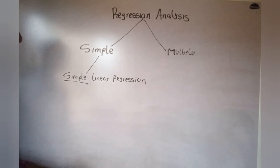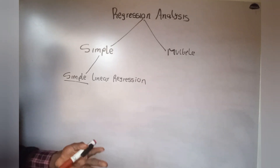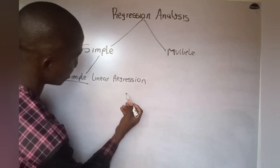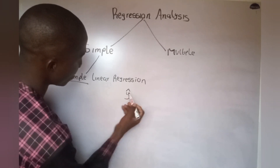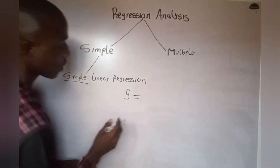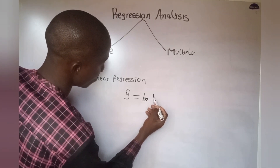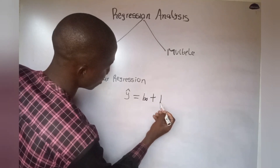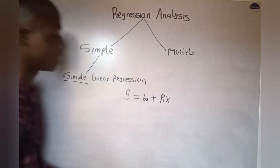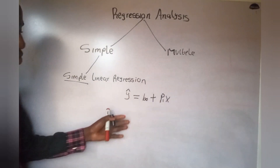Without further ado, let us proceed to the calculation aspect. A typical simple linear regression equation can be represented as: the predicted value of y is equal to the intercept plus the gradient multiplied by x.